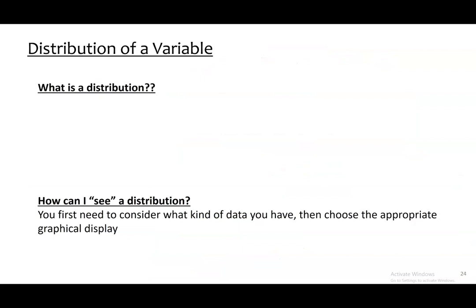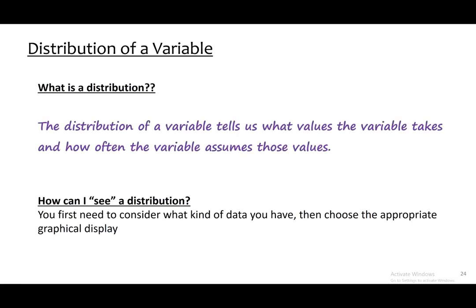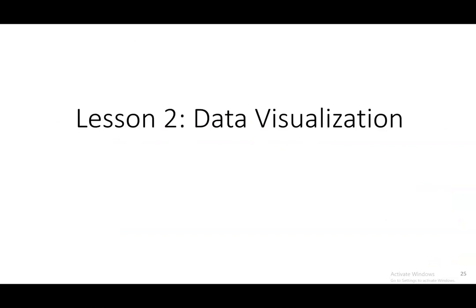Distribution: once you have a dataset and have collected a set of variables on different individuals, you're going to want to describe a distribution. The distribution of a variable tells us what values the variable takes on and how often it takes on those values — what did we see, and how much did we see it? How we visualize it depends on what type of data we're collecting. For categorical data you'll use certain graphs; for quantitative data you'll use different types of graphs. That leads us into data visualization.